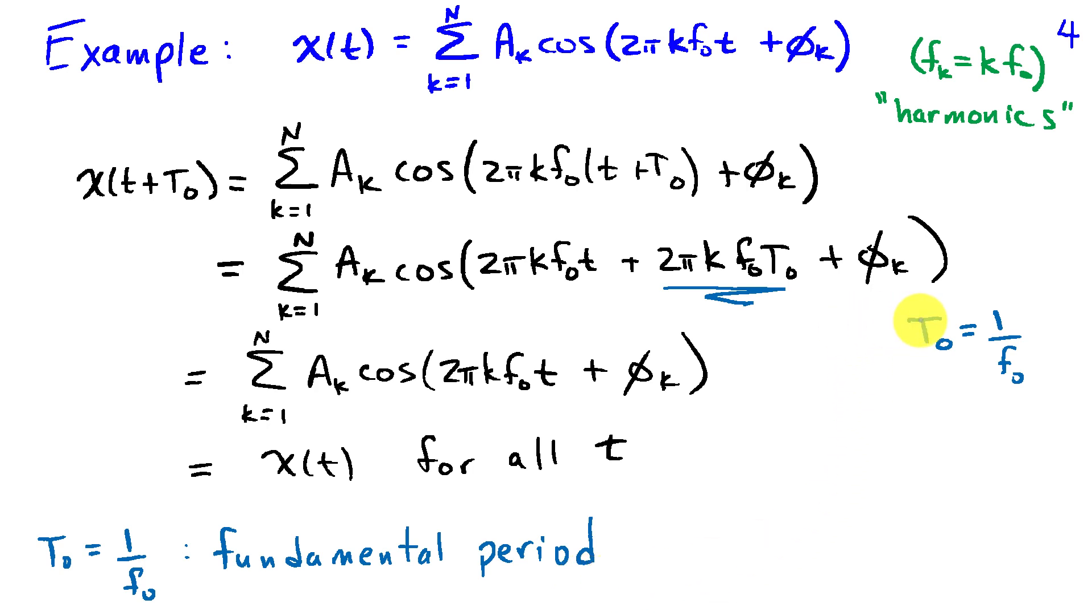We could choose a larger value for t naught, we could choose 2 over f naught, 3 over f naught, and so on, and this would still be periodic but the smallest one we could choose is 1 over f naught.